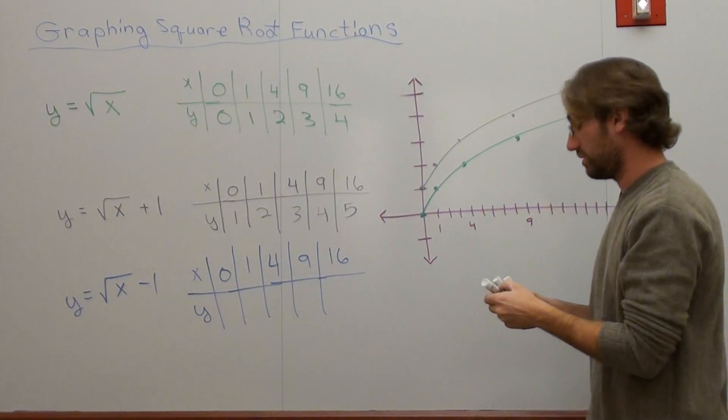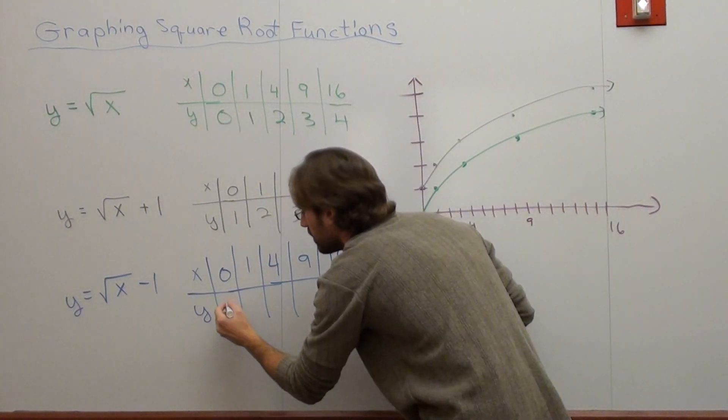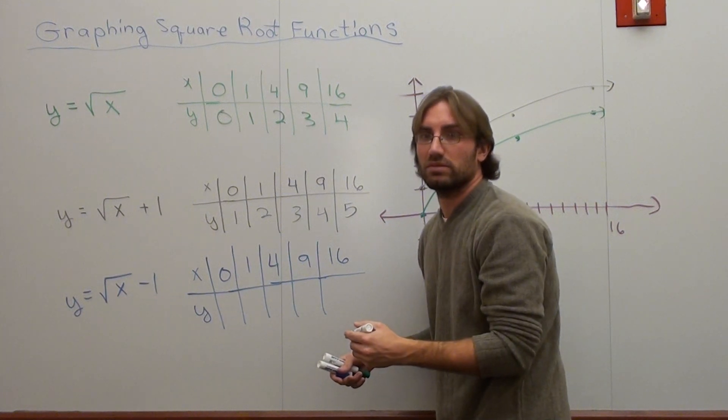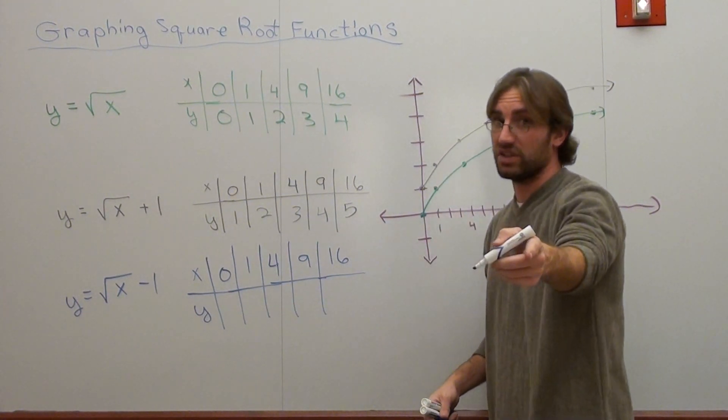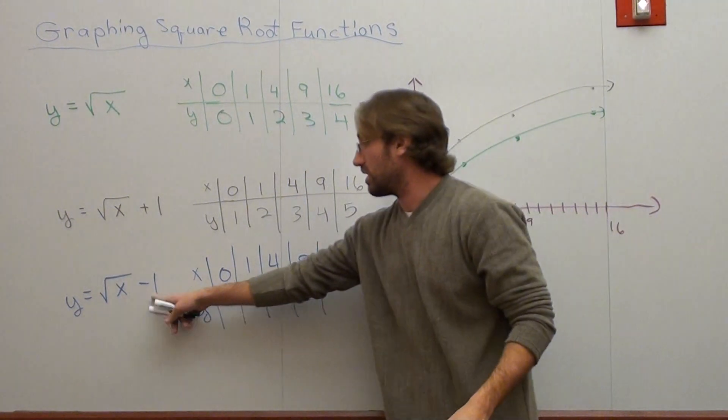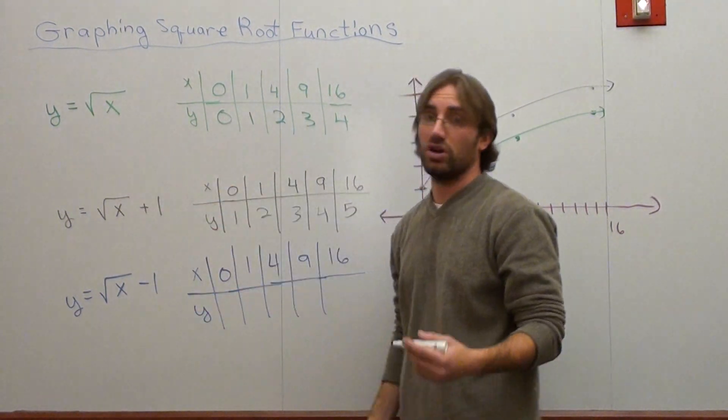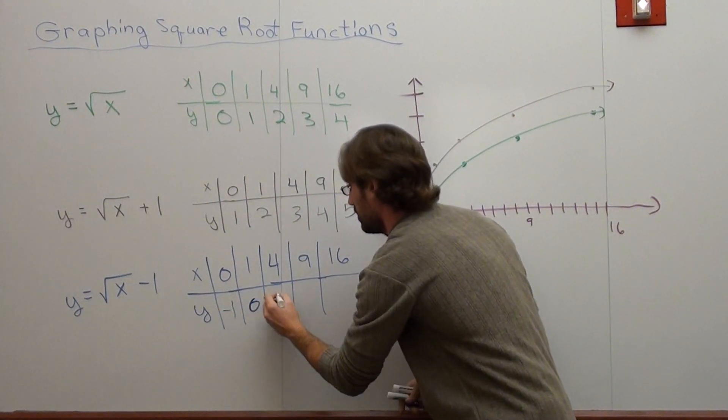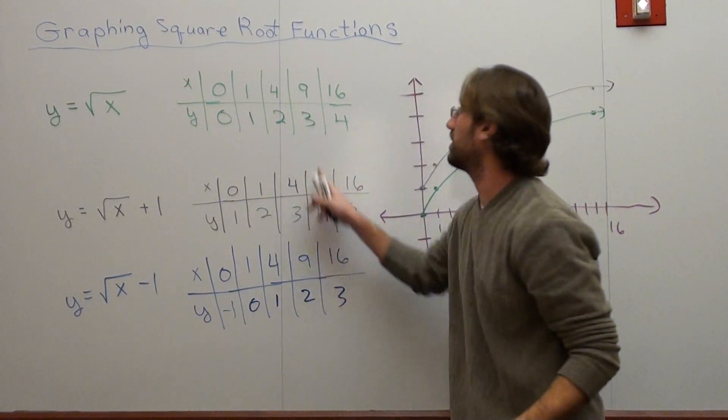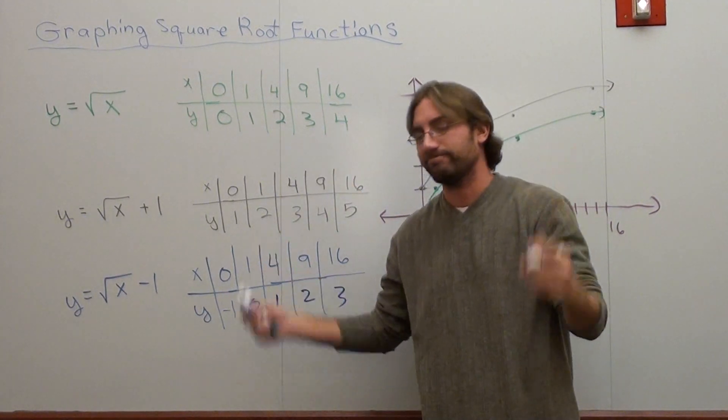And then the last one, do you think I actually have to compute this? Do you have to compute this? I mean, it's negative 1. Look at this one. So all you really have to do is look at these values, and just go 1 down from its parent function. That's it.